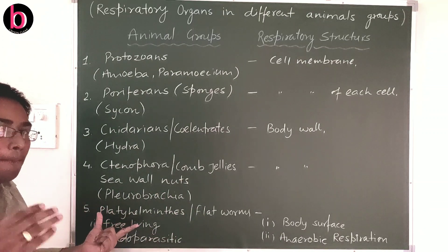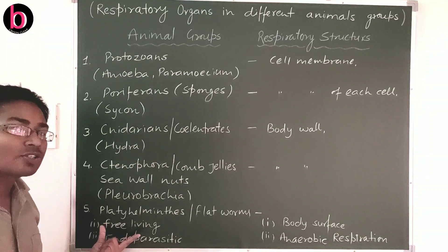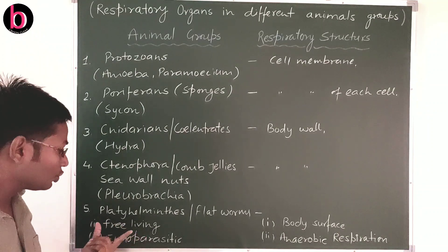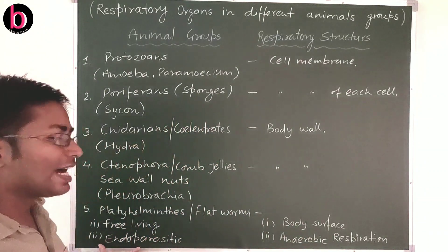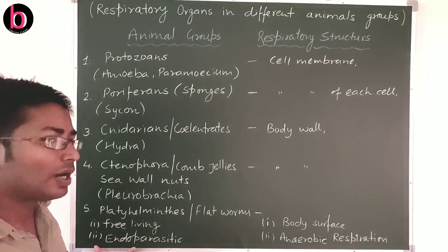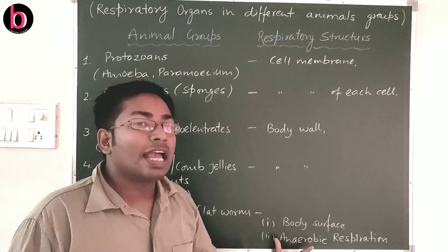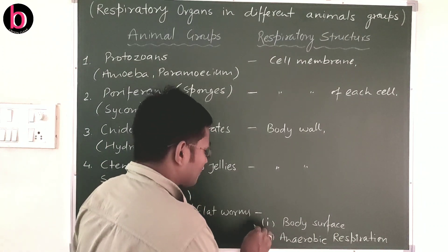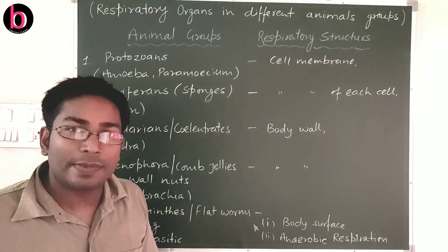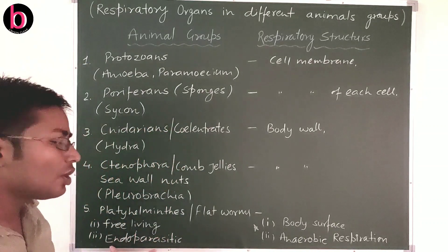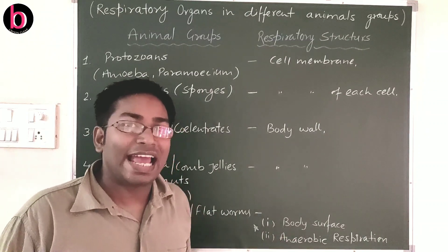The fifth phylum is Platyhelminthes, commonly known as flatworms. Most members are endoparasites, though some are free-living. Free-living members respire through their body surface. Endoparasitic members — found in the intestine of humans and other animals — have an anaerobic mode of respiration, since there is no oxygen in the alimentary canal.